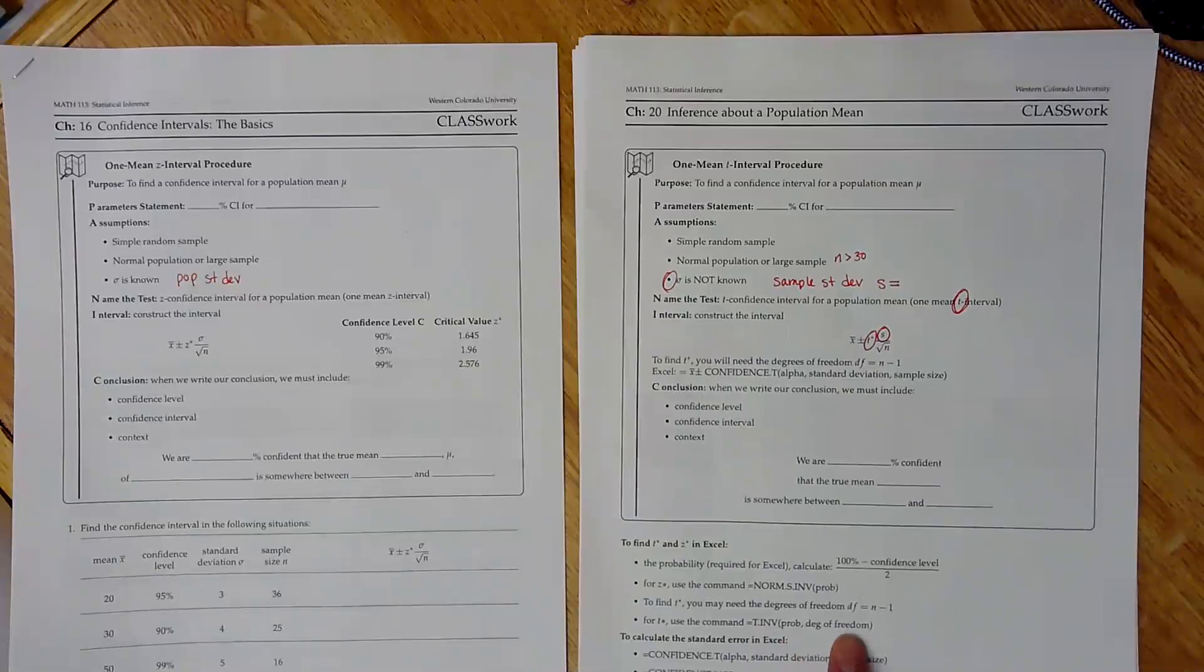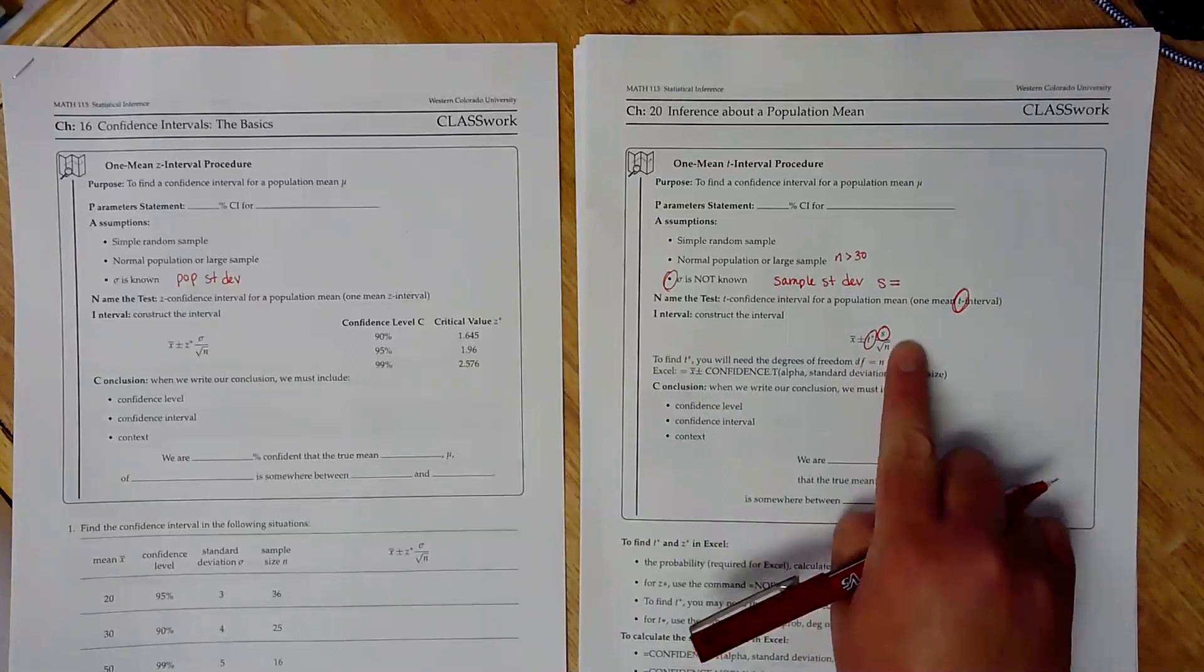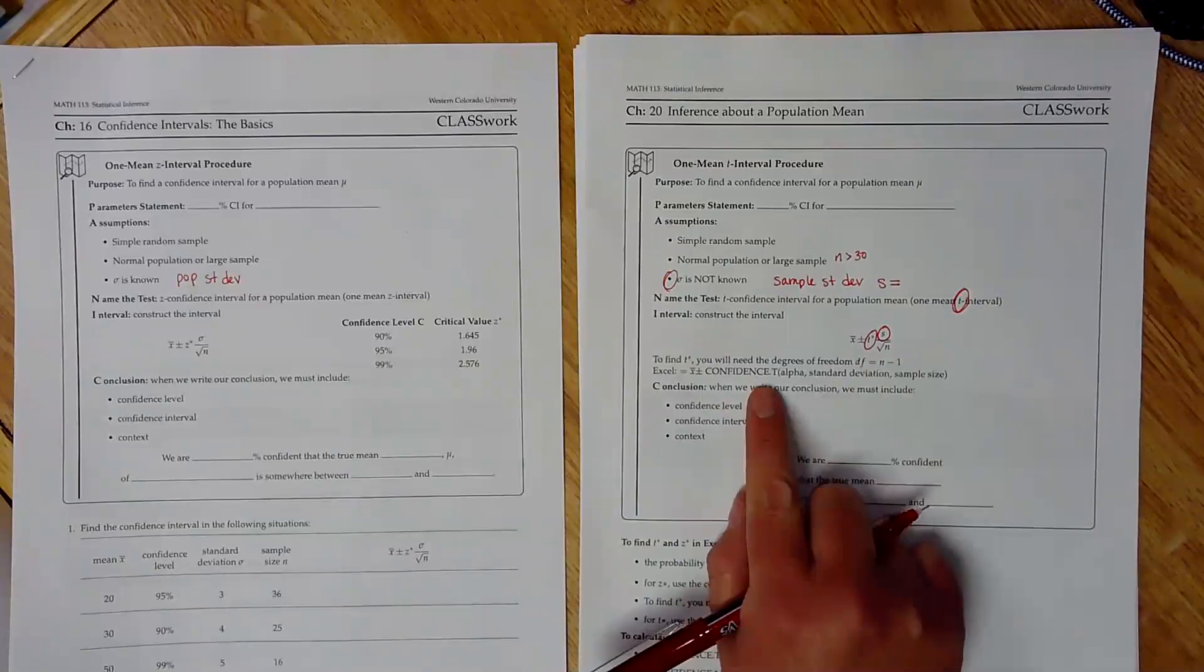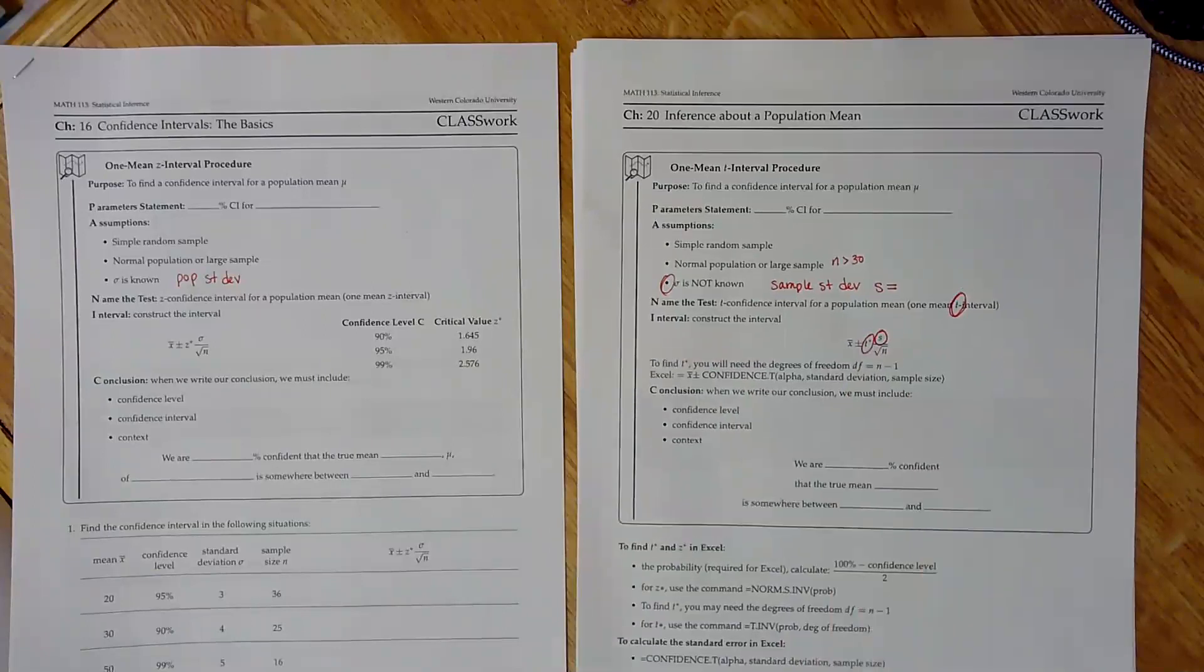If you were looking to get the whole plus or minus, so the t star s over the square root of n, you can use this confidence dot t command. Okay, but all of this is built into the Excel calculator. So you can certainly just go to the chapter 20 tab for the one mean t interval and use that to work through this.